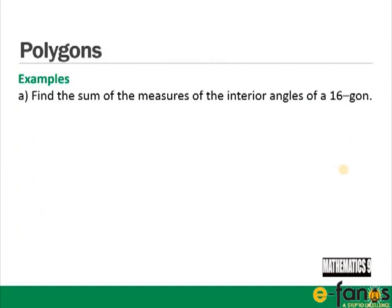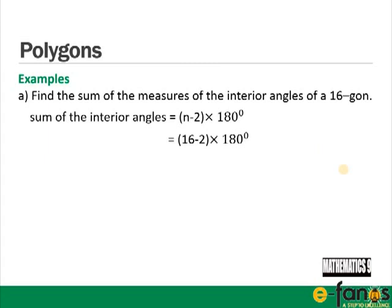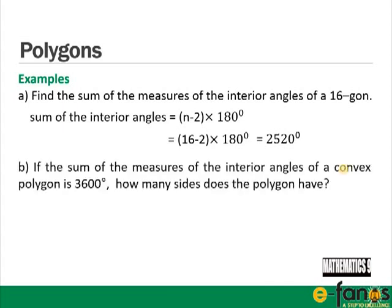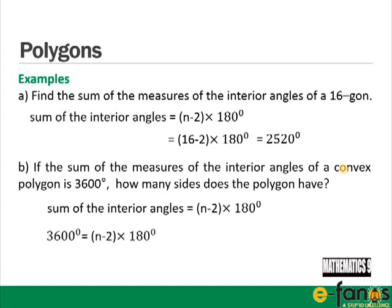Example: find the sum of the interior angles of a 16-gon. The interior angles add up to (n − 2) × 180, so that's (16 − 2) × 180, which is 2520 degrees. If the sum of the interior angles of a convex polygon is 3600 degrees, how many sides does it have? We solve (n − 2) × 180 = 3600, which gives 180n − 360 = 3600, then 3960 = 180n, so n equals 22. The polygon has 22 sides.